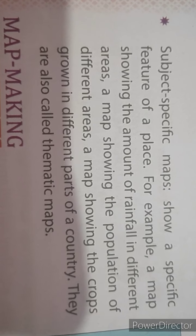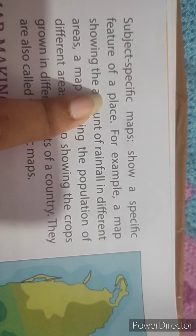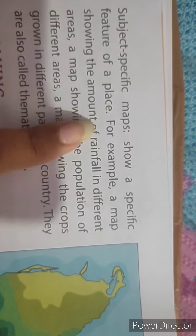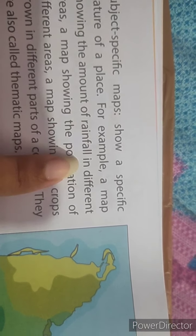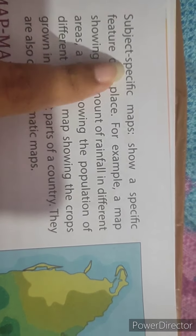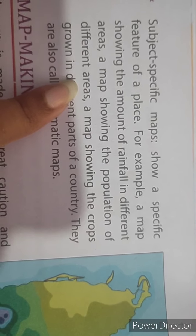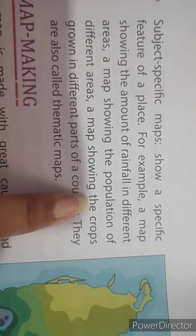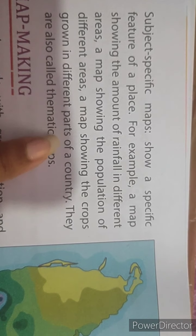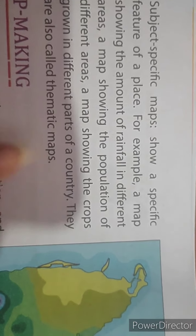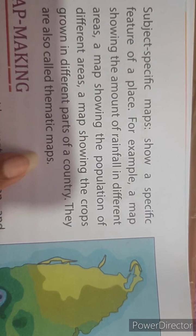Subject-specific maps show a specific feature of a place. For example, they show the amount of rainfall in different areas, the population of different areas, and the crops grown in different parts of a country. Subject-specific maps are also called thematic maps.